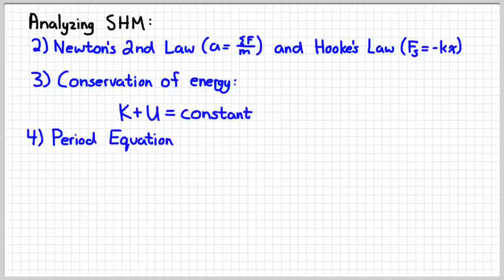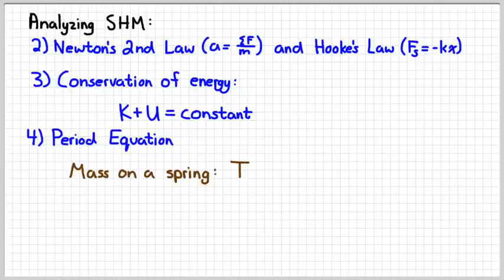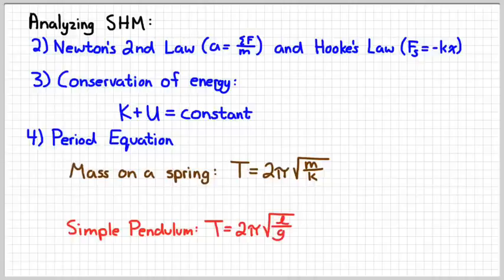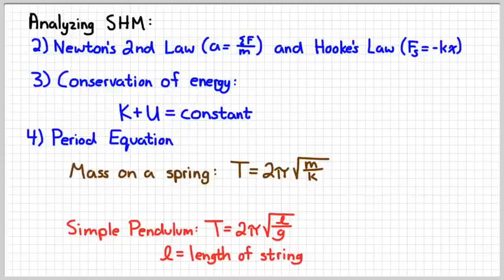The fourth thing we can do is we can use an equation to calculate the period of oscillation. For the mass on a spring, that equation is t equals 2 pi square root of m over k. For a simple pendulum, that equation is t equals 2 pi square root l over g. L is the length of the string for the simple pendulum.